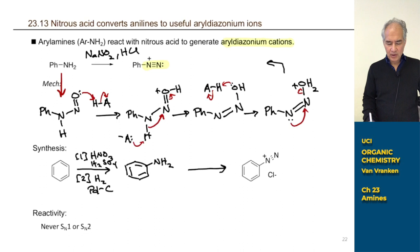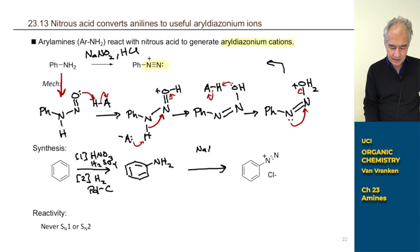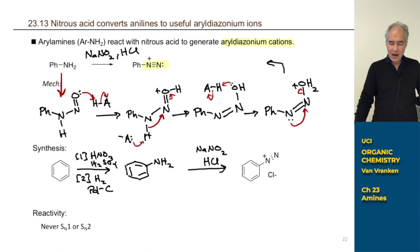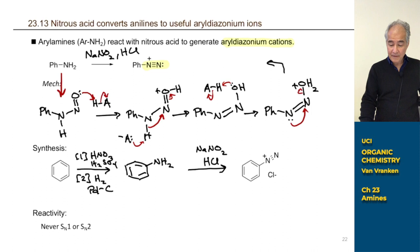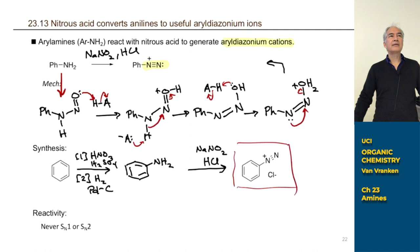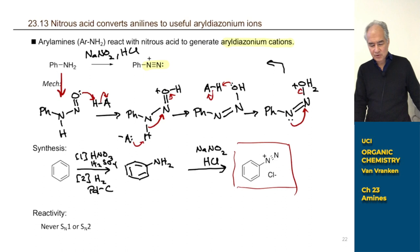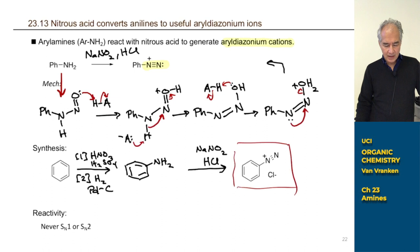Chemists in the lab call it diazotization. Our recipe: we can't buy nitrous acid, but we can make it easily in solution. It takes sodium nitrite — add it to an aqueous solution of hydrochloric acid. You get out a salt. If I draw a box and say draw the product, you can't just draw the cation part — you have to draw the counter ion, which in this case is chloride, because you're floating around in HCl. So that would be the product of the reaction.